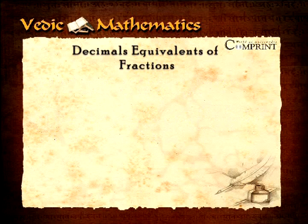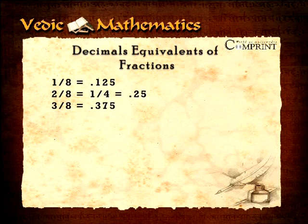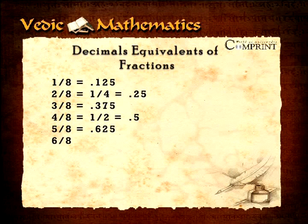One-eighth equals 0.125. Two-eighths, which is again one-fourth, equals 0.25. Three-eighths equals 0.375. Four-eighths, which is half, equals 0.5. Five-eighths equals 0.625. Six-eighths, which is again three-fourths, is 0.75. And seven-eighths equals 0.875.